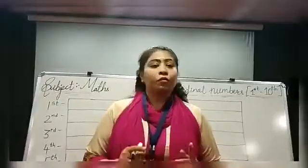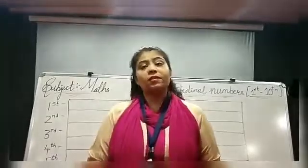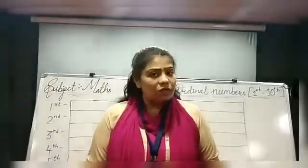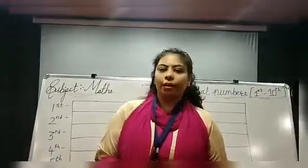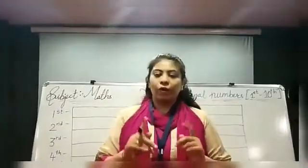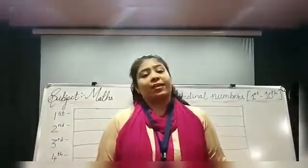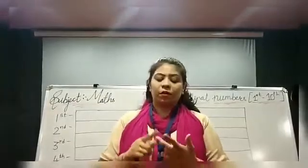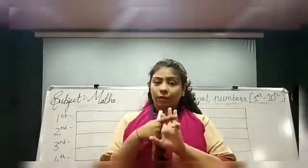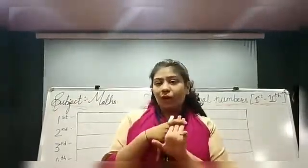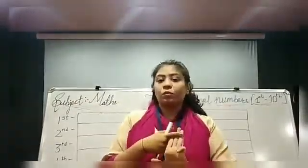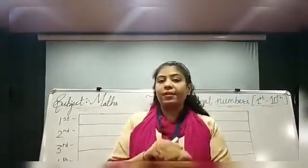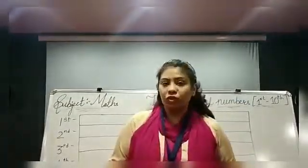The number which gives us the exact position of an object is called ordinal number. For example, जब class में कोई competition होता है, so उसमें 1st, 2nd, 3rd position पे आते होना, तो उसमें आपकी 1st, 2nd, 3rd क्या होती है? Exact position होती है.